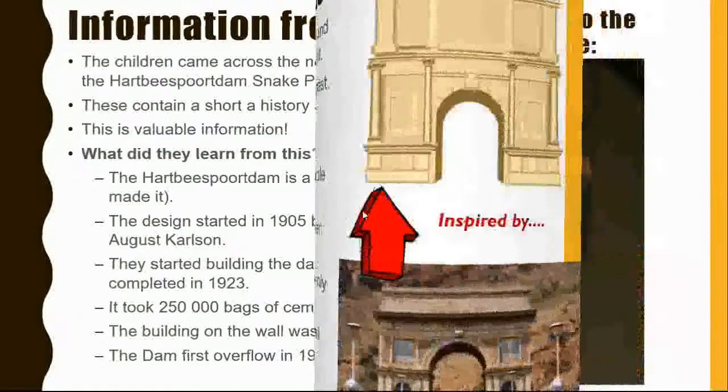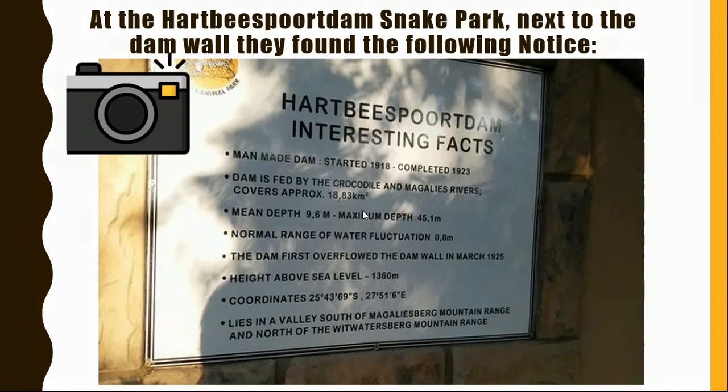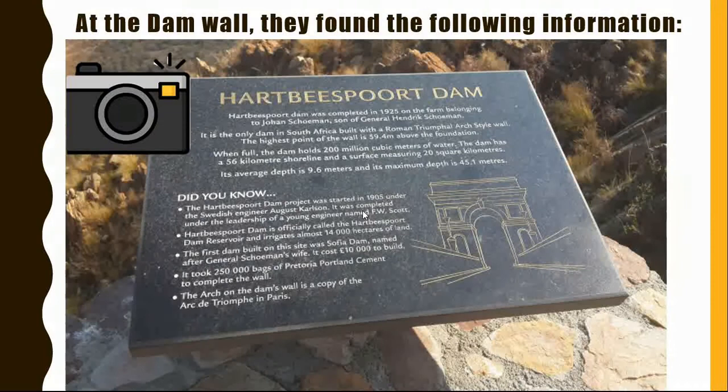At the Hartbeespoort Dam snake park next to the dam wall they found the following notice. Here we can see information on when the dam was made, the depth of the dam, the range of water fluctuation, the height above sea level, as well as the coordinates. From the dam wall they found additional information telling more about the history of the building of the dam.